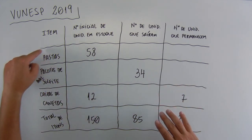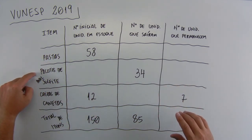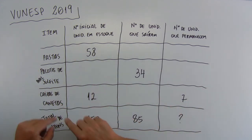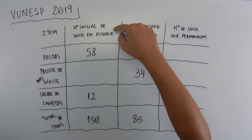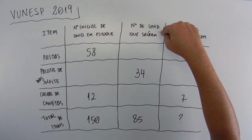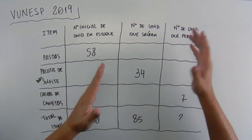So, items - there's pasta, pacote de sulfite (paper), caixa de caneta and total de items. Here is a sum, right? Total de itens. For example, here - número inicial de unidades em estoque, número de unidades que saíram, número de unidades que permanecem.